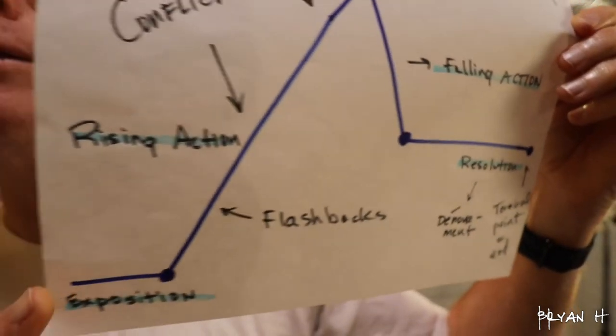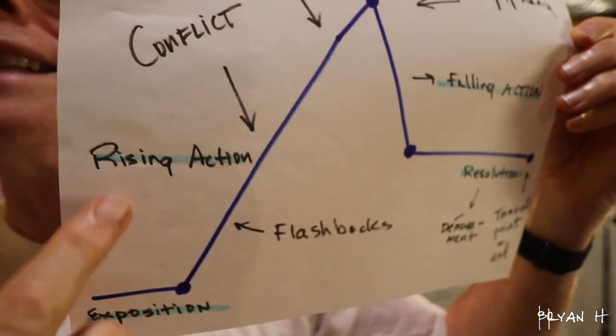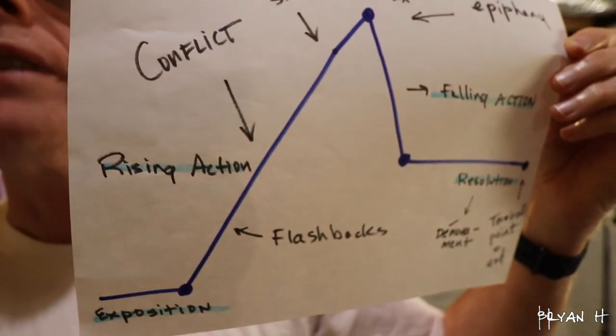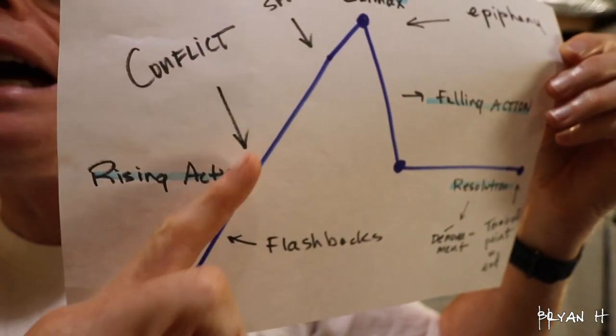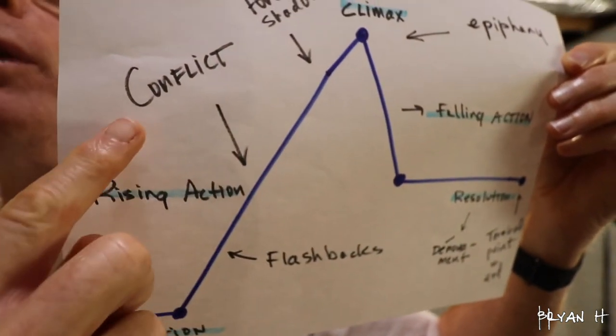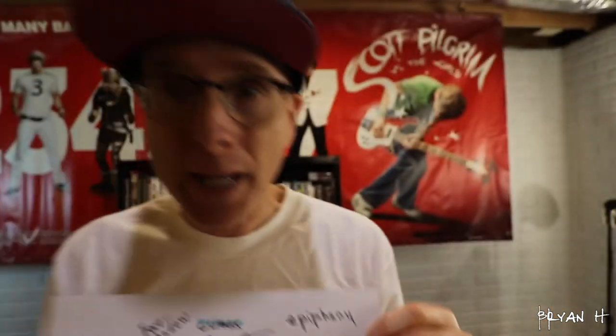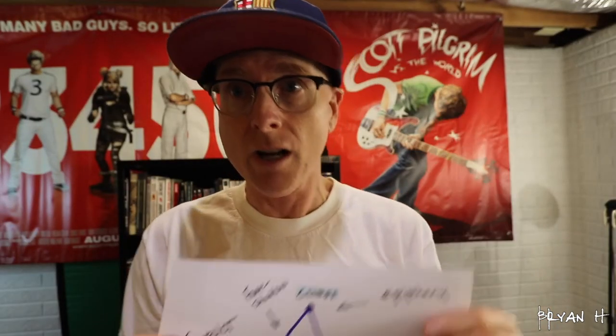This next part has to do with what we call the rising action, and this is where stuff happens. Over here we've got the conflict, and that was a big part of what the chapter was about — this whole business related to conflict.